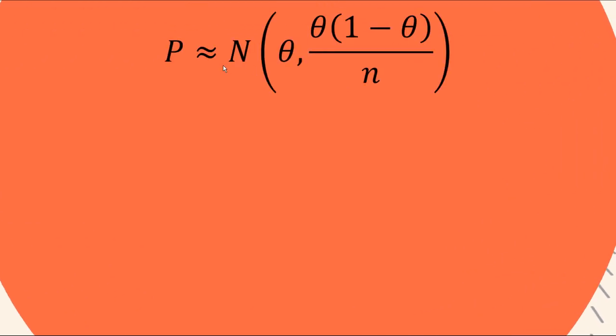So let's take a sample proportion and call it P. Now we often say that's normally distributed with the mean of theta, which is the population parameter, and the variance of theta times 1 minus theta over n, and we say that that's normally distributed. But as we'll find out, it's only going to be normally distributed if n is sufficiently large.